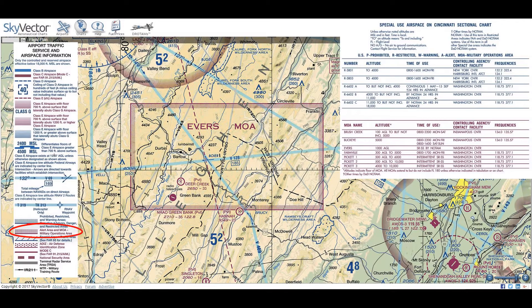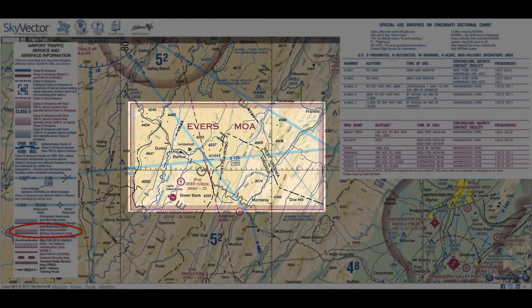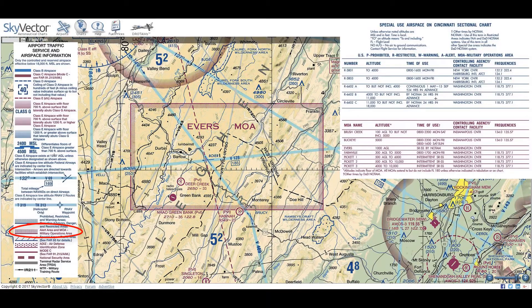Now let's move on to a different type of symbol. This magenta line with magenta inward pointing hash marks denotes the location of a military operations area, or MOA. Unlike the other areas, MOAs have a name instead of an ID number. Within a MOA, military aircraft often perform training maneuvers, but unlike warning or restricted areas, we are allowed to fly inside a MOA without permission. That said, you must exercise extreme caution when doing so.